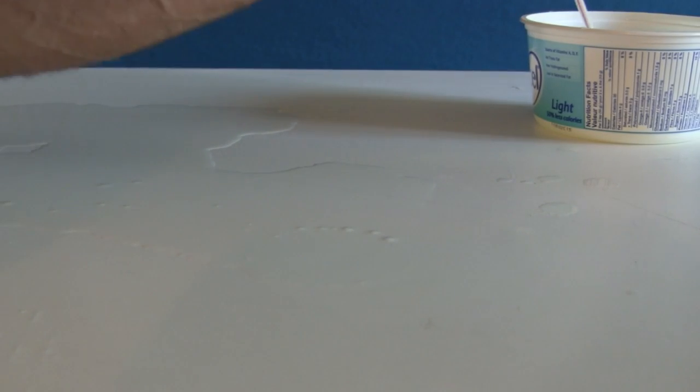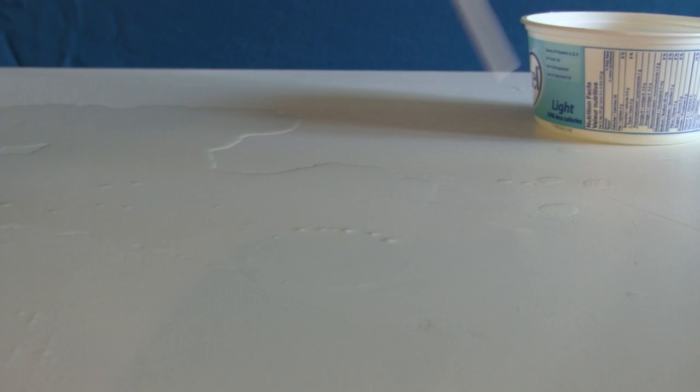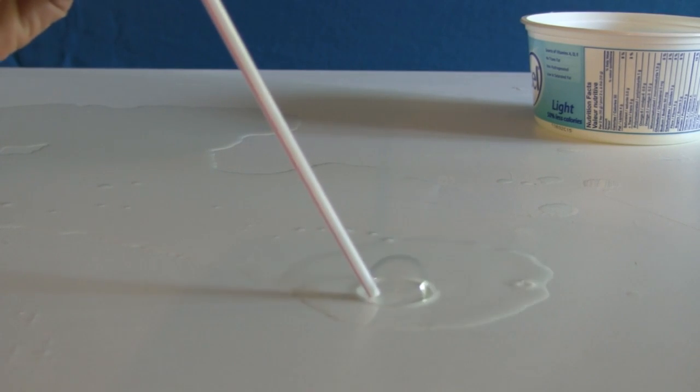Start by finding a very smooth surface, the smoother the better. The smoother surface helps the bubble keep its shape. I'm using this laminated table top.